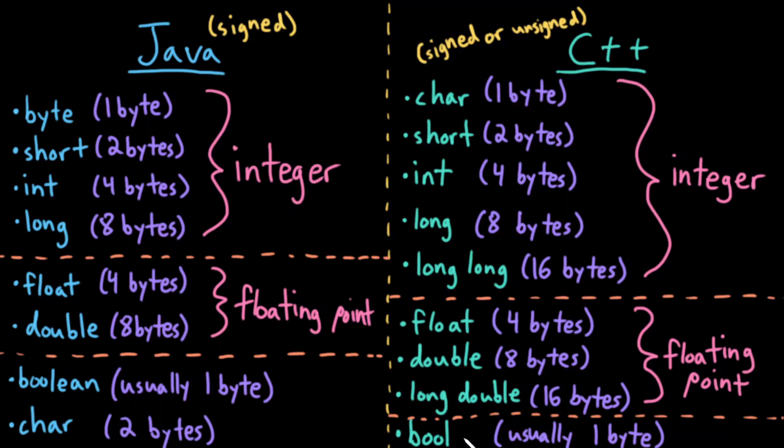And we also have a Boolean value, which is type bool, and usually this is one byte for similar reasons as I explained before. Even though it's storing one bit of information, because of architecture reasons, it's generally stored in one byte on its own.